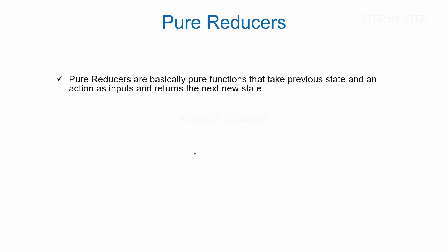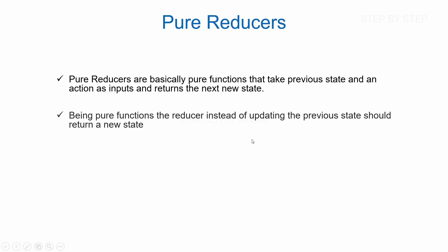Pure reducers are nothing but pure functions. We will write a function and call it. Inside a pure reducer, we pass two arguments: the first argument is the previous state, and the second is the action, which returns the new state. As reducers are pure functions, instead of updating the previous state, they return the new state.